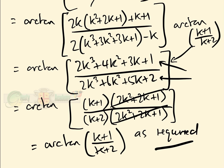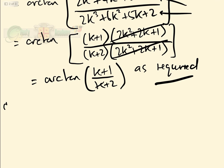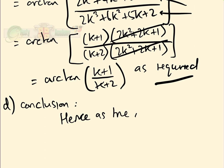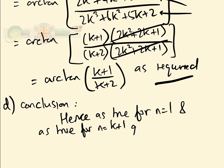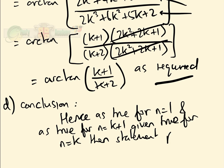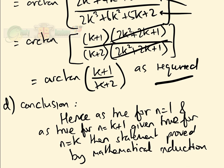For the conclusion — part D — we write: hence, as true for n equals 1, and as true for n equals k plus 1 given true for n equals k, the statement is proved by mathematical induction. And there are the four parts of the proof — done.